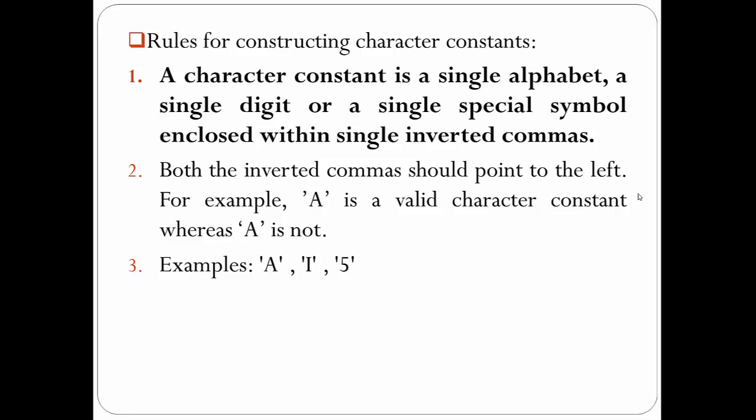The first rule is: a character constant is a single alphabet, a single digit, or a single special symbol, enclosed within single inverted commas. This is a very important rule to remember. Whenever we are declaring or defining any character constant, it should always be enclosed inside single quotes.